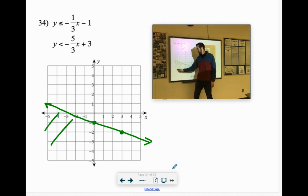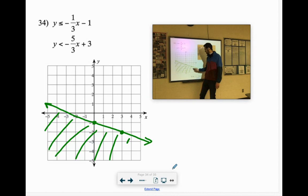y is less than, has to be a dotted line, shaded below negative five thirds x plus three. So let's go up three. Oh, I love this song. Anyway, slope is negative five over three, so we're down five over three, dotted line.